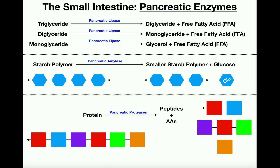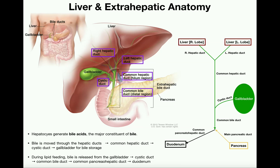The question to leave you with for the next video is: how does the pancreas end up secreting these enzymes into the duodenum, the small intestine? Furthermore, does it only secrete enzymes, or does it secrete other things? It turns out the pancreas releases enzymes, but it also releases bicarbonate, and it works with the gallbladder and liver to ultimately help get bile into the small intestine.